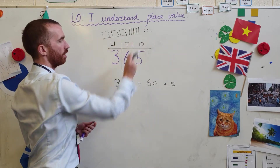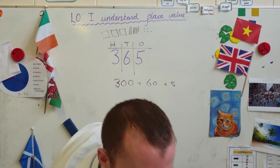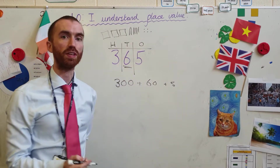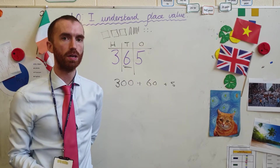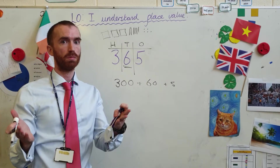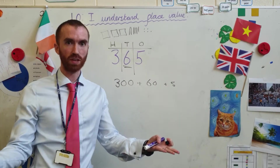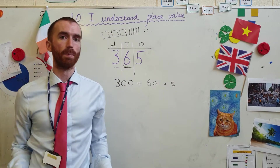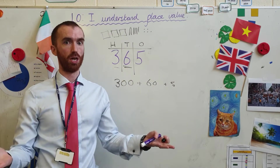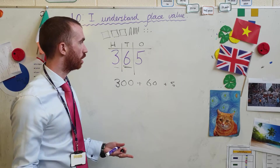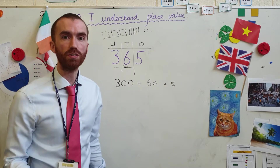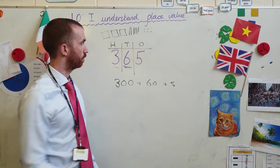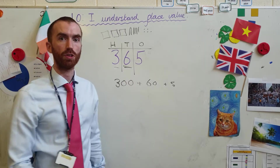300 and 60 and 5 — so that's the place value. If I said to you, what is the value of the 6 in that number? You would say it's 6 tens, or 60. What is the value of the 3 in that number? It is 300. I might say to you, how many ones are in 365? Well, there's 5 ones in 365.